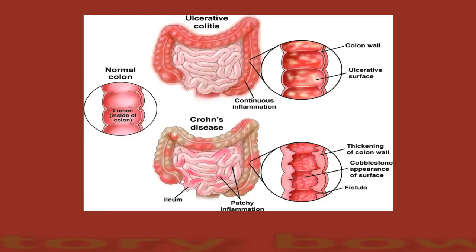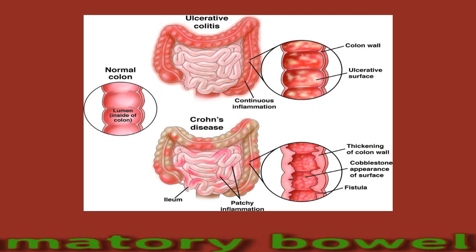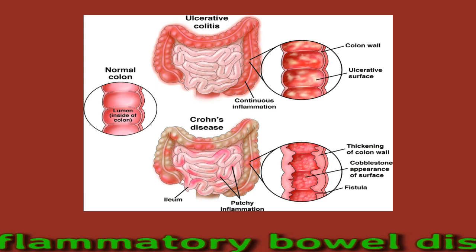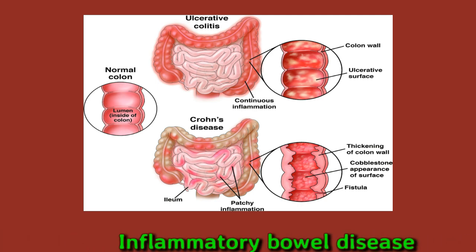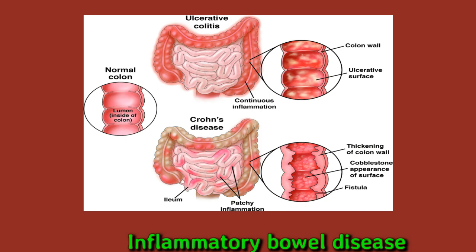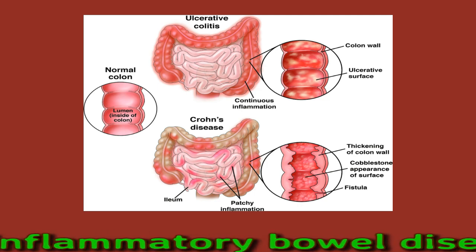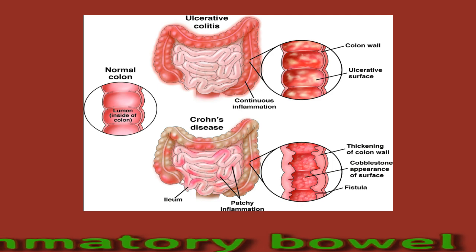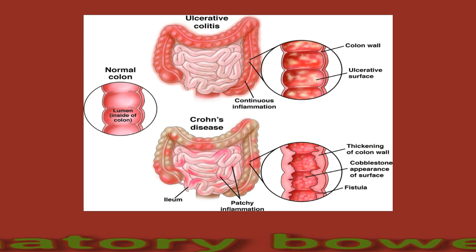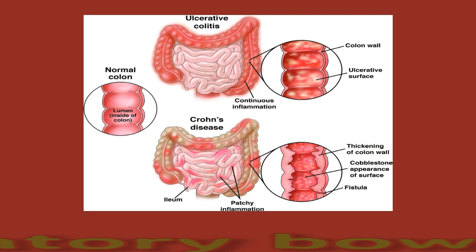Crohn's disease and ulcerative colitis are chronic conditions that can cause painful inflammation anywhere in the digestive tract. The umbrella term for both conditions is inflammatory bowel disease, or IBD. Crohn's disease is most common in the small intestine, and ulcerative colitis occurs in the large intestine. There is no clear cause of IBD, but it occurs due to a weakened immune system, and genetics may also play a role. Pain in the abdomen is a typical symptom of inflammatory bowel disease.